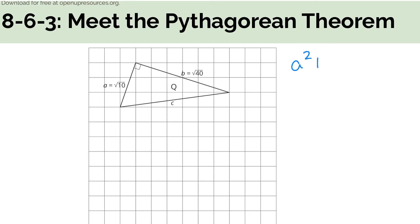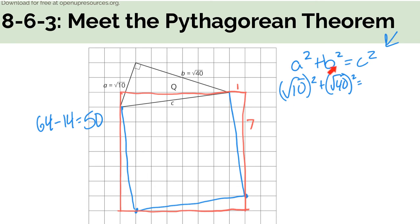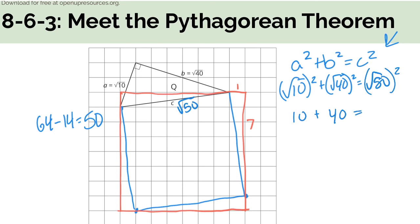On triangle Q, start out by writing A squared plus B squared equals C squared, fill in what you know, and then work to see if it's true. Side C is at an angle, so you'll have to draw a big square and figure out the length of C. I filled in what I know: A is the square root of 10, B is the square root of 40 — I have to square both. For C, I drew my tilted square, drew my big square around it: area of the big square is 64, subtract off 14 for the corners, giving an area of 50, which means C is the square root of 50. Square root of 10 squared is 10, square root of 40 squared is 40, square root of 50 squared is 50 — and 10 plus 40 equals 50. So yes, it is true.